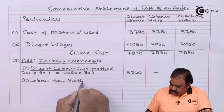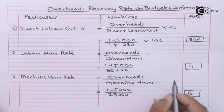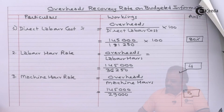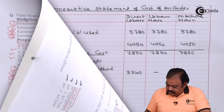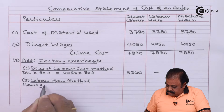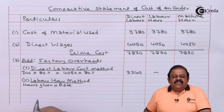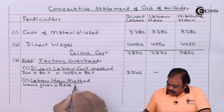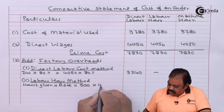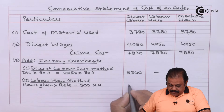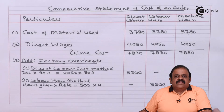So factory overheads under direct labor cost method are 3,240. For the labor hour rate method, direct labor hours for this job are 900 hours multiplied by the rate of rupees 4 per hour. So it is 3,600.